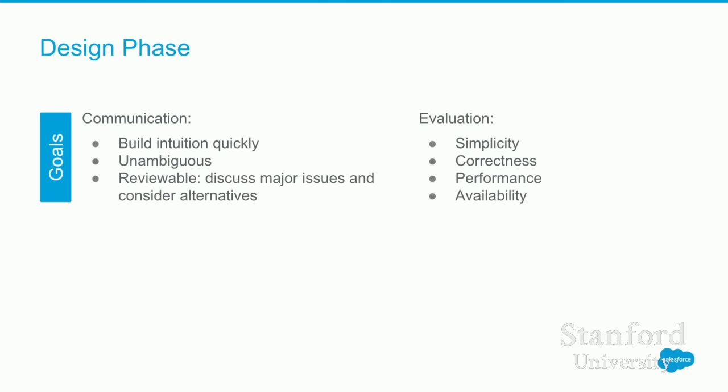So what do we do in the design phase? If we really wanted to do this well, we'd have goals around communication and evaluating our design. We want to communicate clearly and unambiguously about that design. We want to build intuition, make the design reviewable, discuss issues, and consider alternatives. Then we'd want to evaluate the design before actually building production code — asking: is it simple enough? Is it correct? Is it fast? Is it available? Is it scalable?